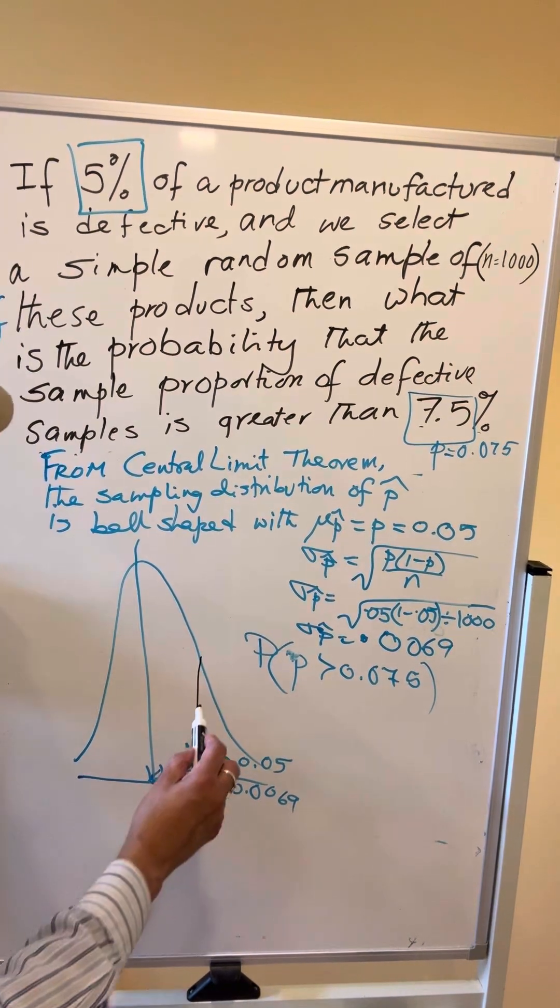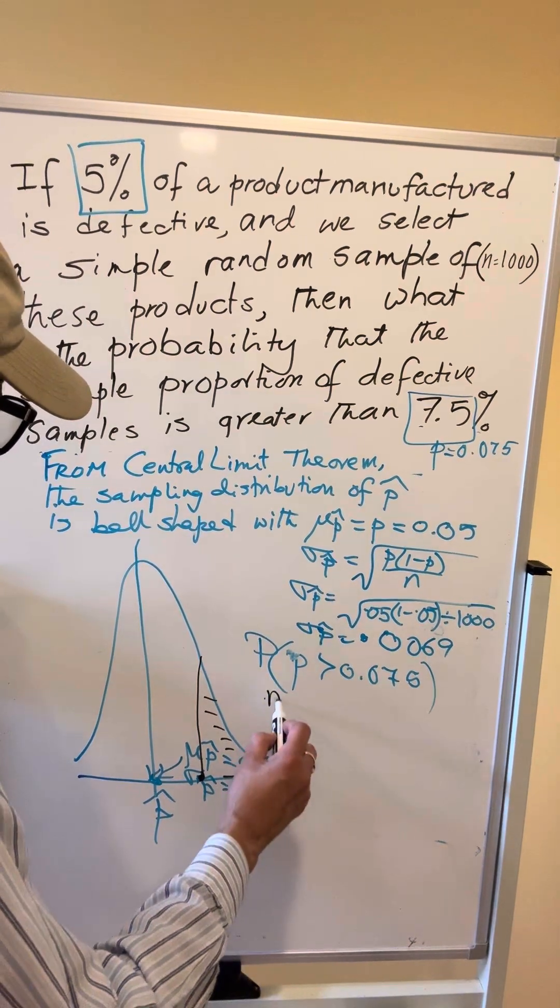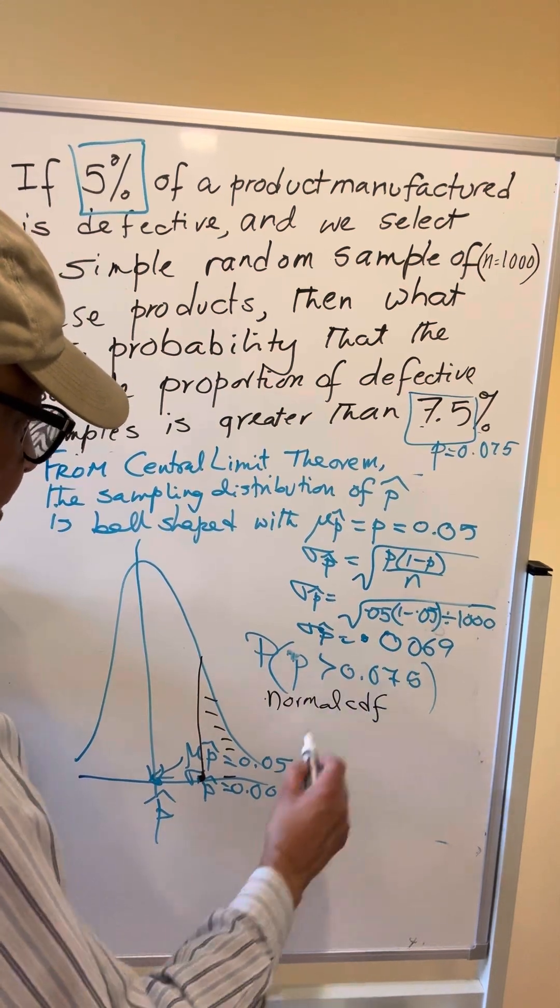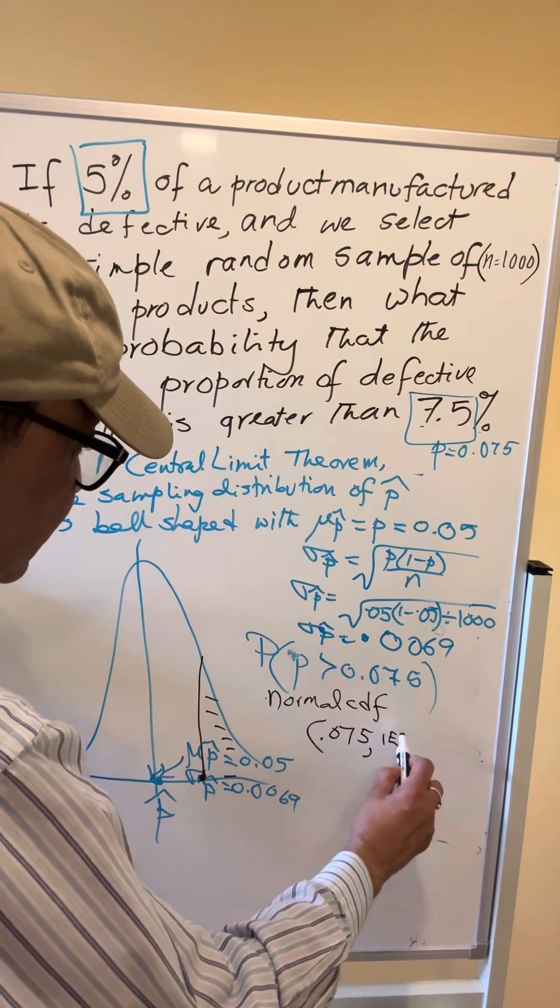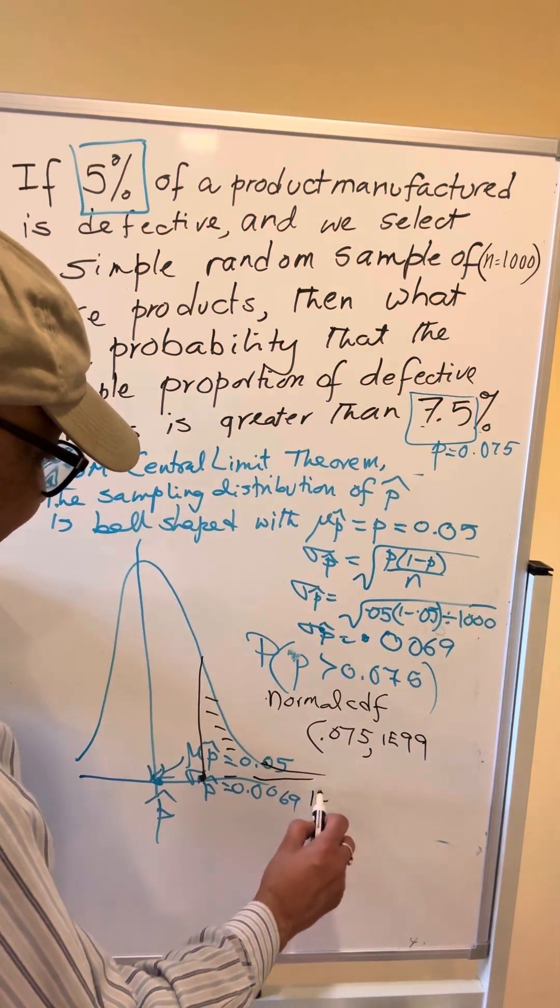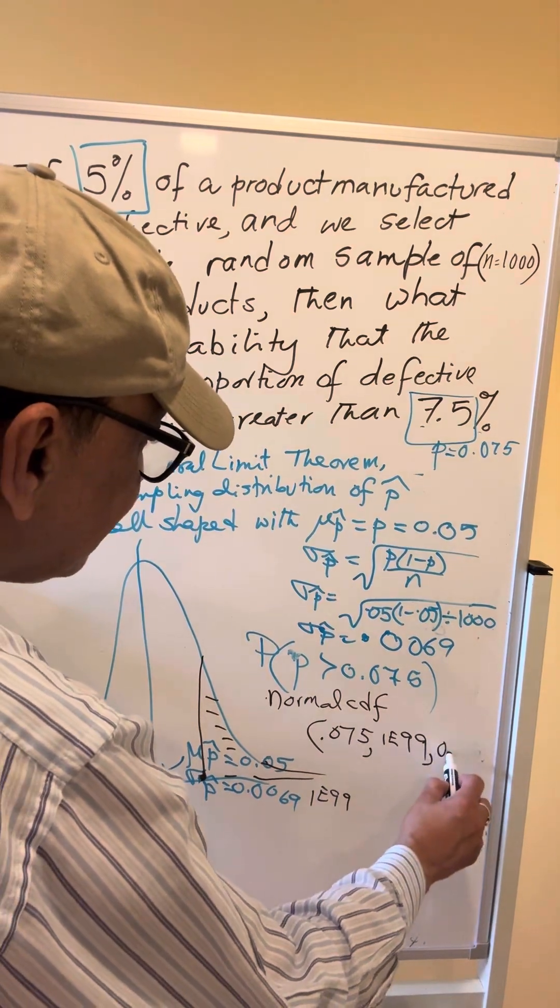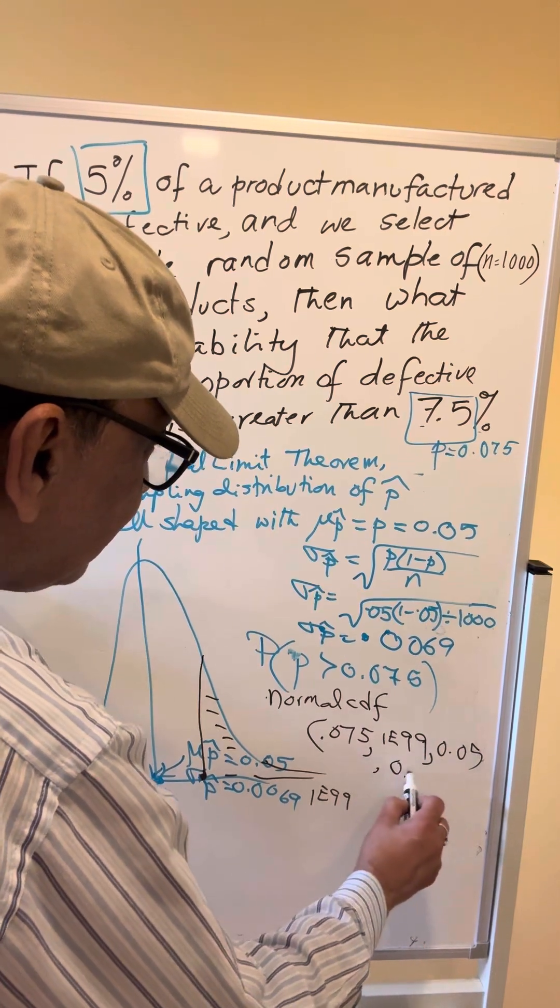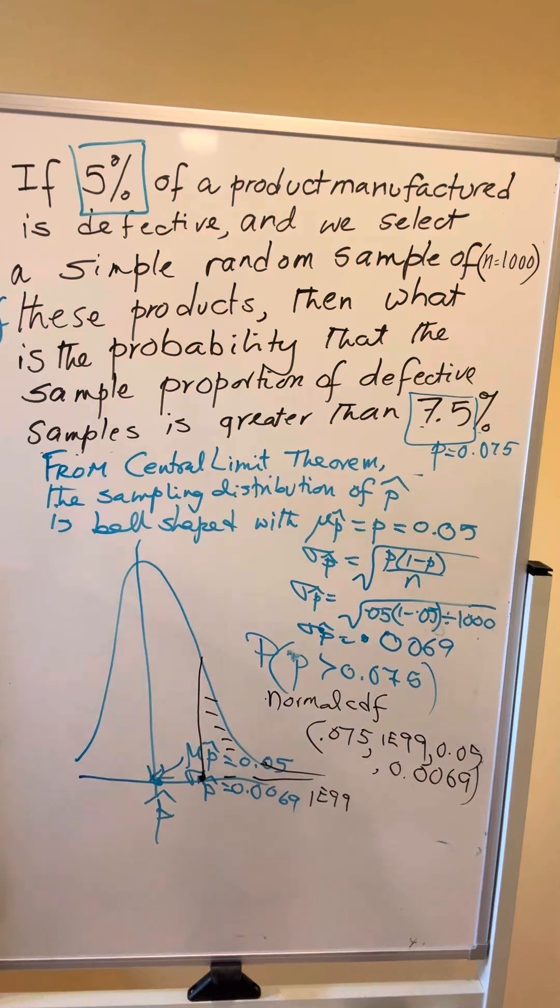0.075 and we want to find out this area. So this will be, we will use our calculator TI-84. Normal CDF is 2nd verse 2. My lower boundary is 0.075, my upper boundary is a very large number on the right, 1E99 means 1 followed by 99 zeros. My mean is 0.05 in the center, and my standard deviation is 0.0069.